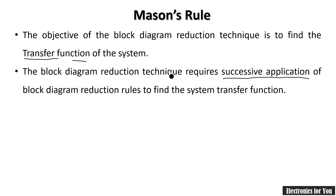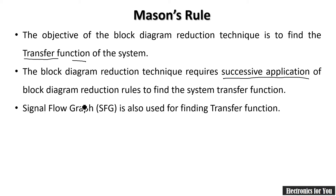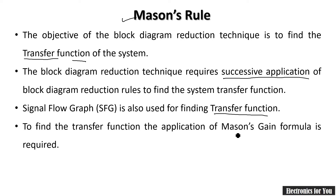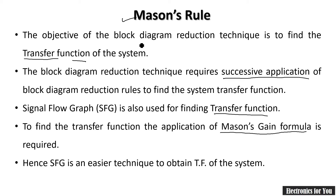The same is the objective of signal flow graph by using Mason's Gain Formula. Signal flow graph is also used to find the transfer function of the system, using one formula known as Mason's Gain Formula. Signal flow graph is an easier technique compared to block diagram reduction, because in block diagram reduction we must know all the reduction rules.